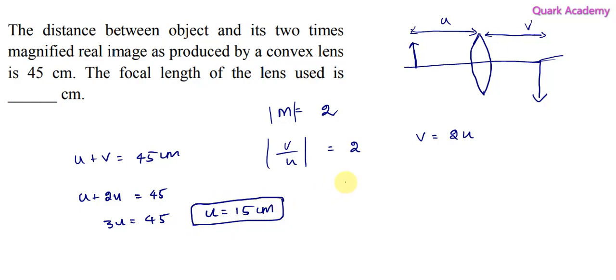And also we can find the image distance, that is 30 centimeters. Just subtract it in this one, we'll get it. Now, let us use the sign convention and the formula, the lens equation: 1 by f equals 1 by v minus 1 by u.